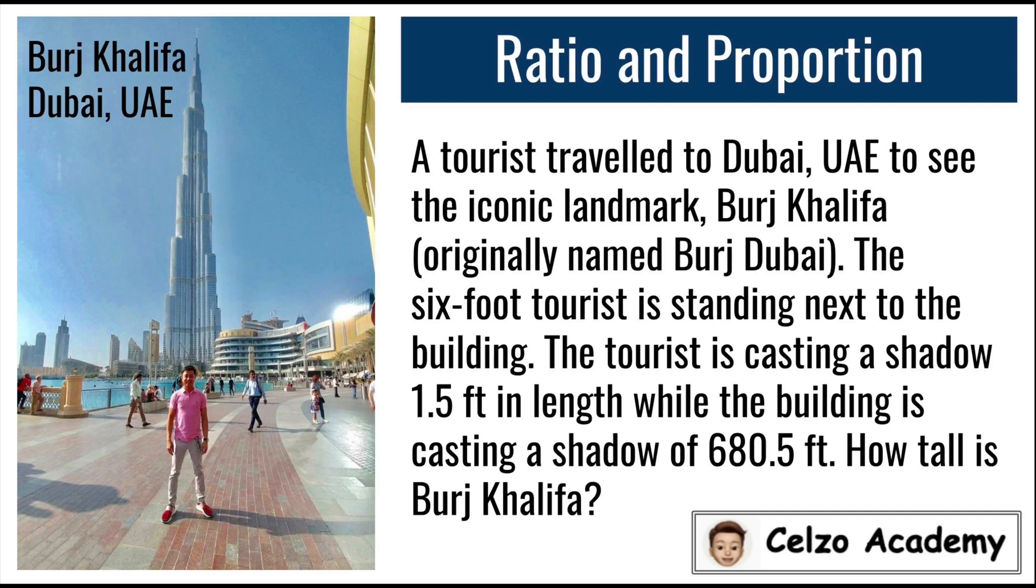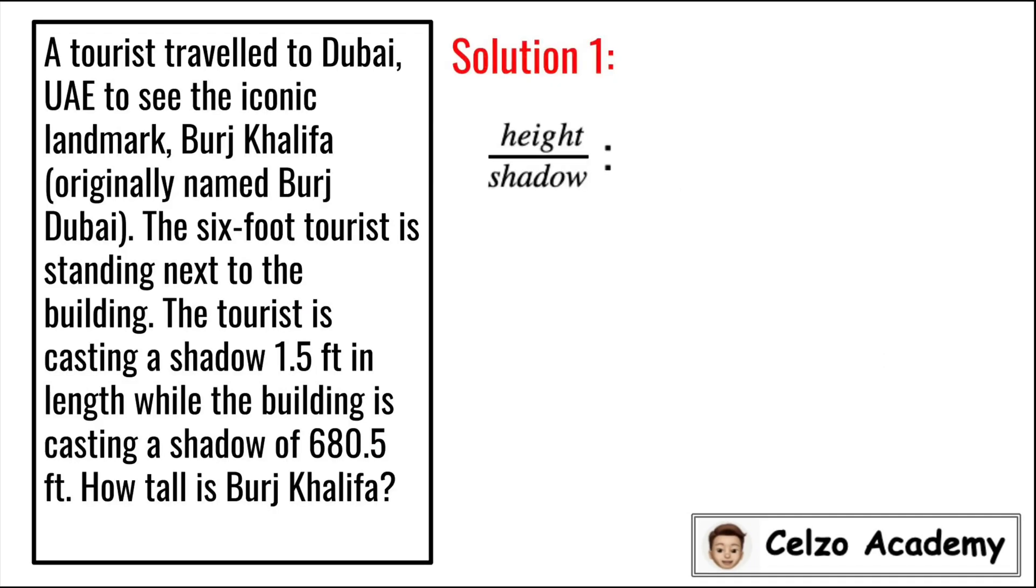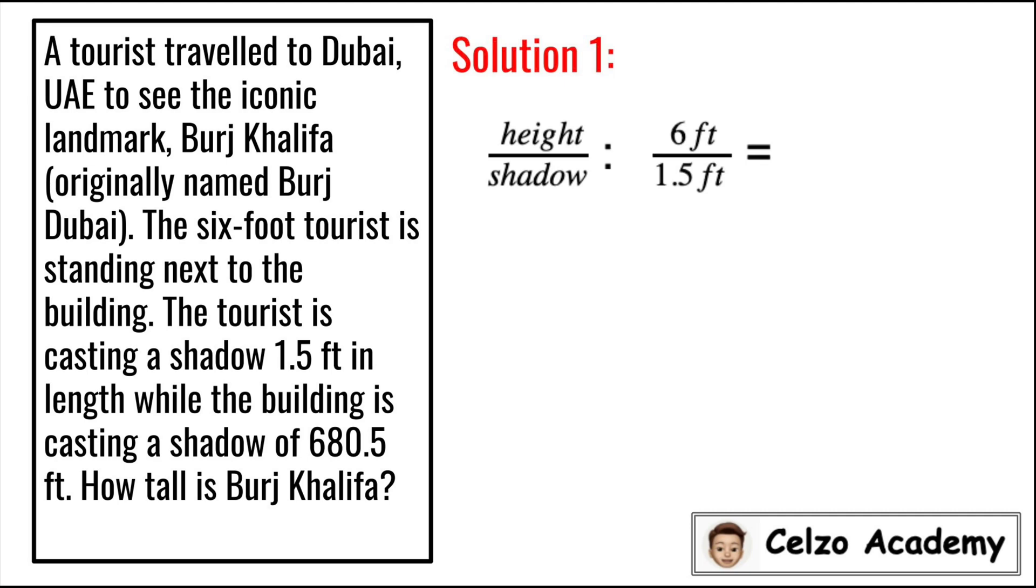Here's the detailed solution to this problem. First, we will set up ratio and proportion, comparing the height and shadow of the person and the building. In this problem, the 6 foot tourist is casting a shadow of 1.5 feet. So that is 6 feet over 1.5 feet.